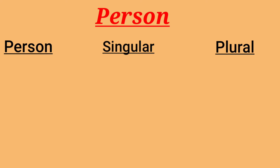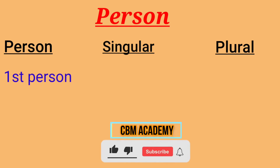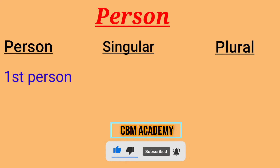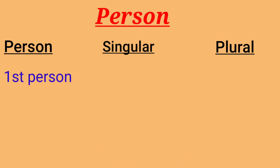Let's make a simple chart about person to learn easily. When I speak with my friends, it's called the first person. When we talk about ourselves, our opinions, and things that happen to us, we generally speak in the first person. The first person indicates the speaker and uses the subject pronoun 'I' for singular and 'we' for plural.